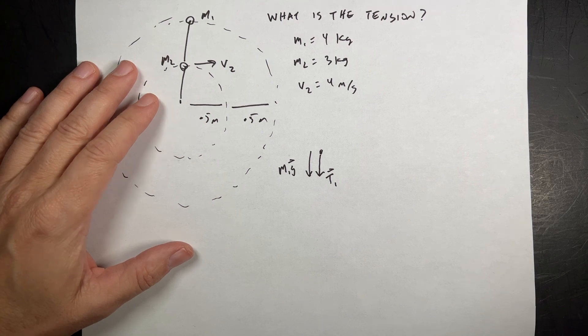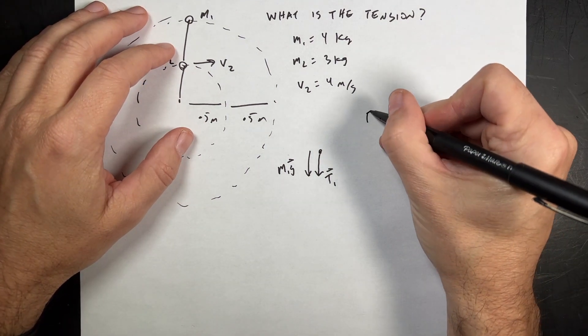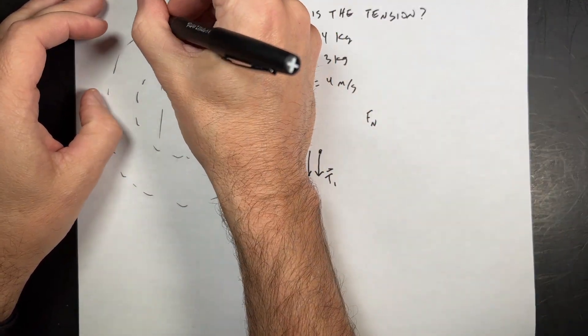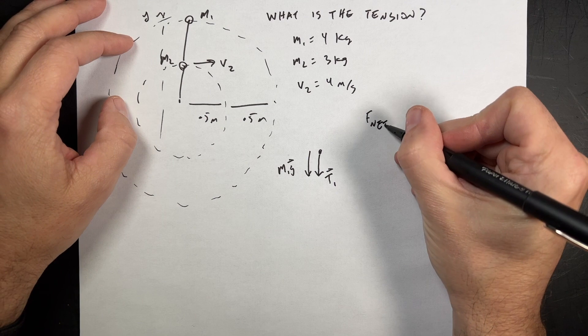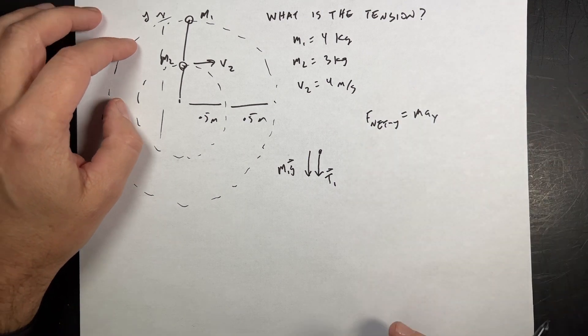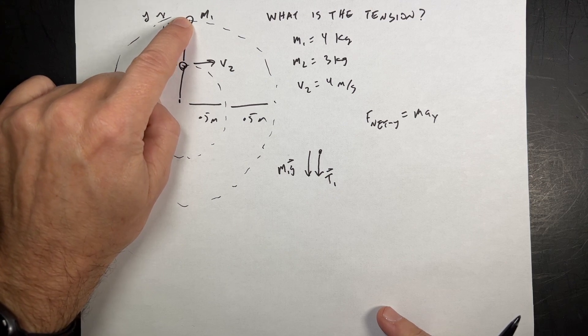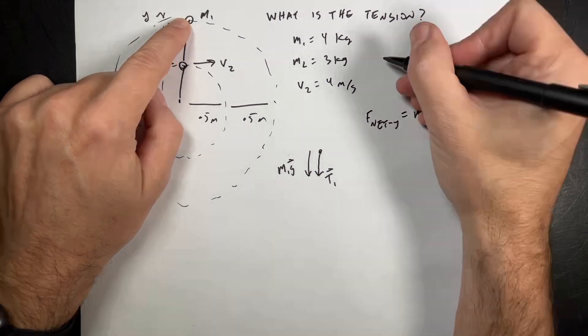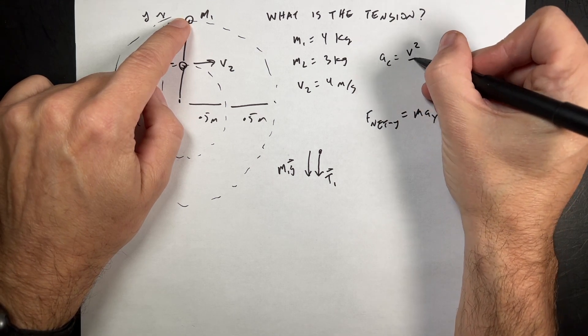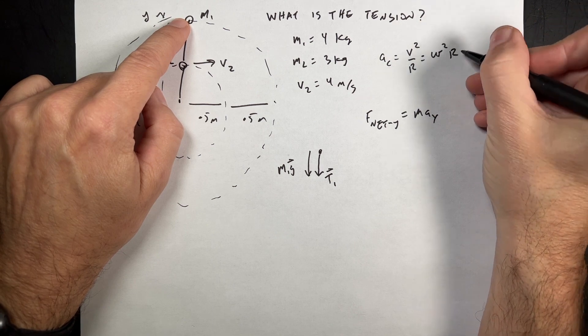That means that the mass has to be accelerating down, and yes, it does accelerate down. Because F net, let's call this the y direction, F net y is mass times acceleration in the y direction. This one has an acceleration in the y direction because it's moving in a circle. Remember that the acceleration of an object moving in a circle is v squared over r or omega squared times r. Those are the same thing.